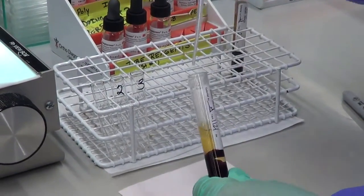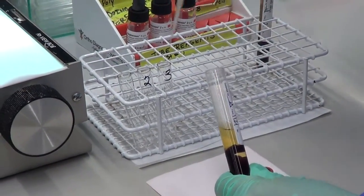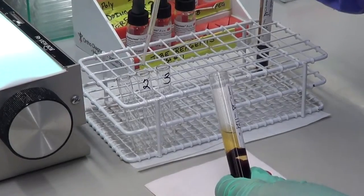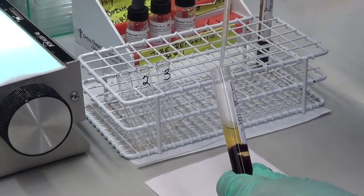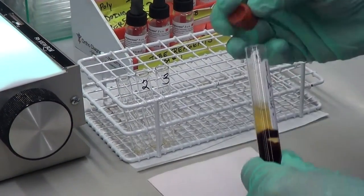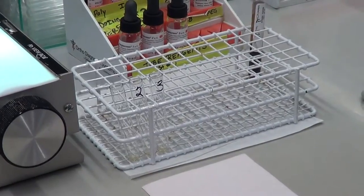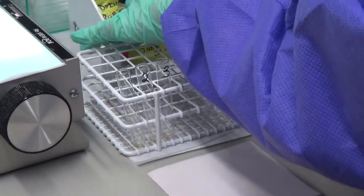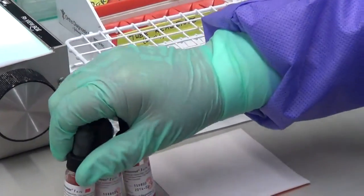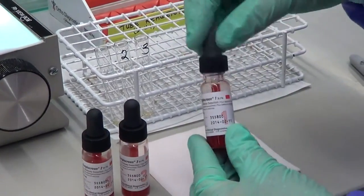To perform the indirect antiglobulin testing, you add two drops of the patient's serum to each test tube. Then you add one drop of the reagent O cells to each of the test tubes. This is the first phase of the antiglobulin test.